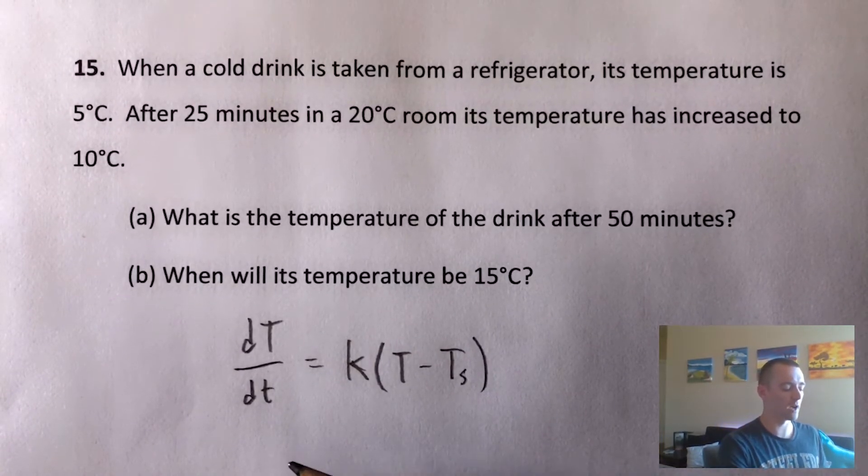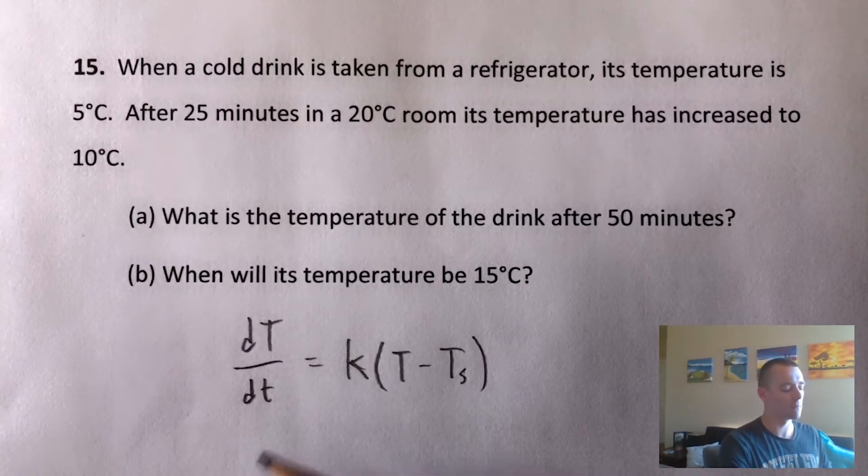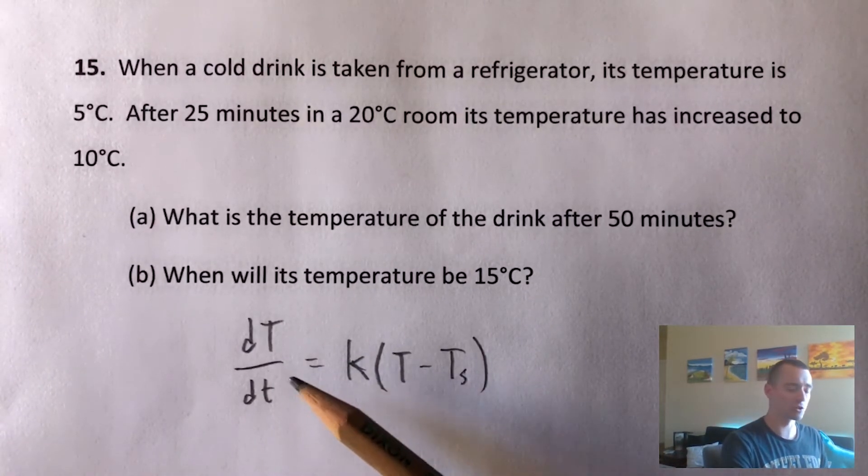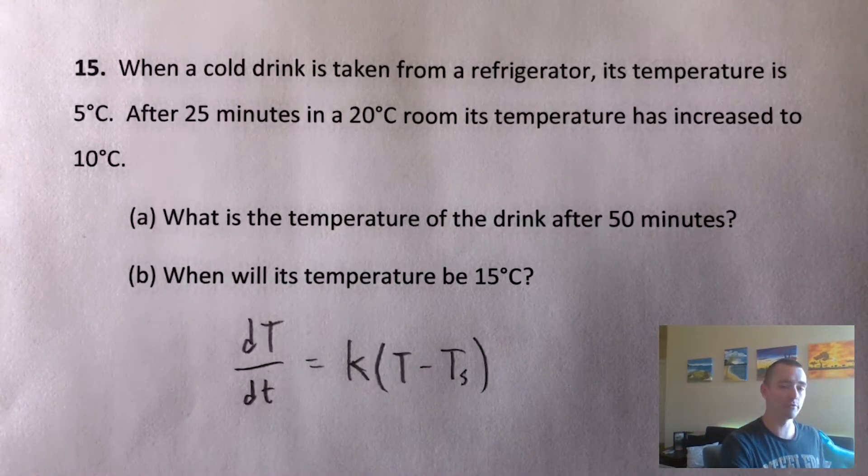So this formula, basically we have a couple different things going on here. This capital T is the temperature of the object you're looking at. So in this case, the temperature of the drink. The lowercase t is the time that has passed since it was taken out of the refrigerator.